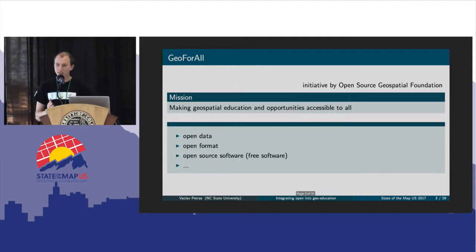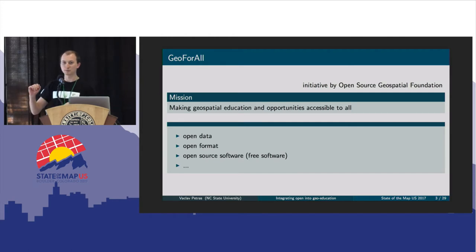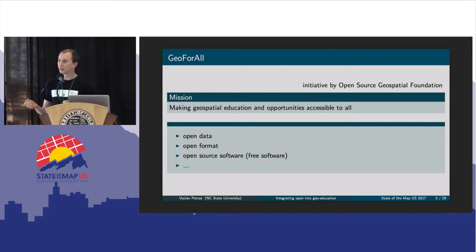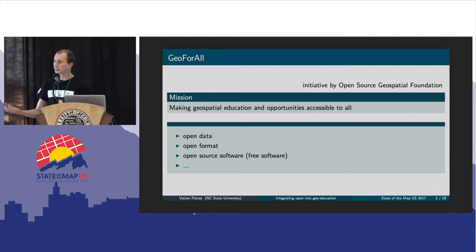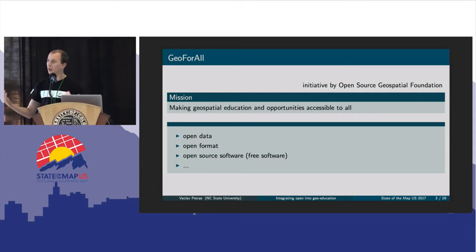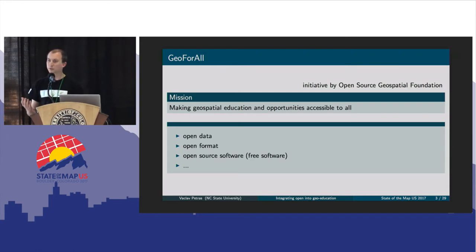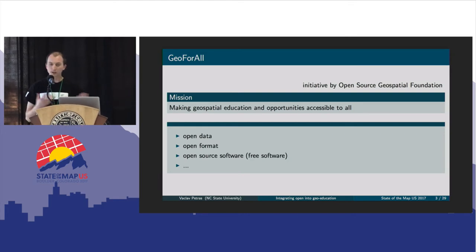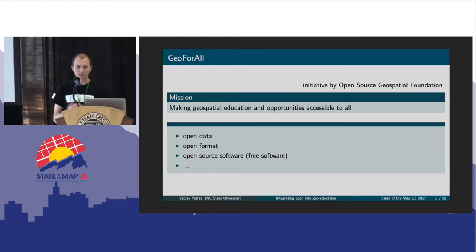I will tell you what that means. Geo4All — who has heard about it? For those who didn't, Geo4All is a network of researchers and educators organized around the Open Source Geospatial Foundation and several other organizations like ISPRS. The mission of this network is to make geospatial education and opportunities accessible to all.